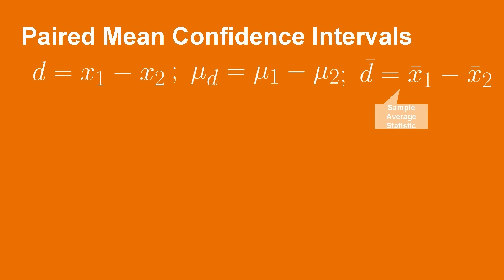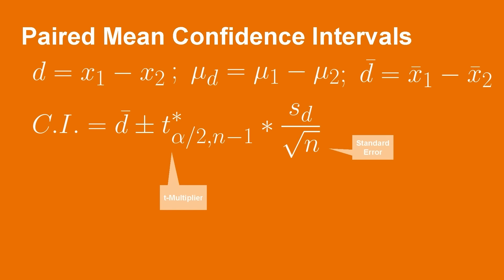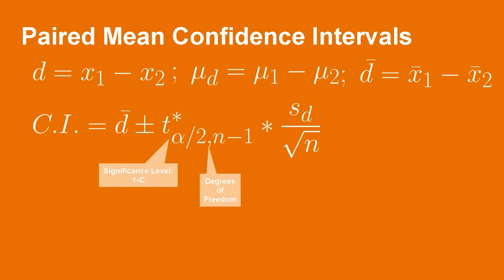With this notation, the confidence interval is constructed as follows. It is centered at d bar, the sample statistic. We then add or subtract a factor made up of a t multiplier and the standard error. The t multiplier is a function of the significance level over 2 — to specify that we are working with a two-tailed confidence interval — and the sample size, or more specifically, the degrees of freedom in the problem. For the paired mean problem, these degrees of freedom are simply equal to the sample size minus 1.